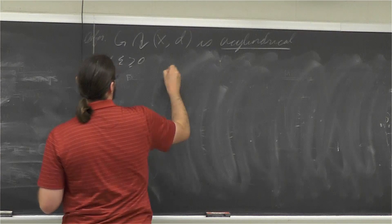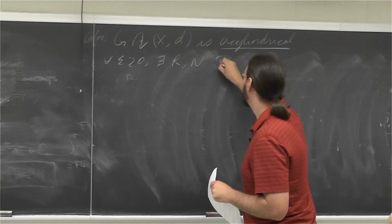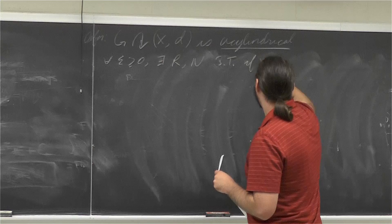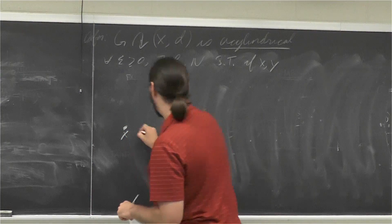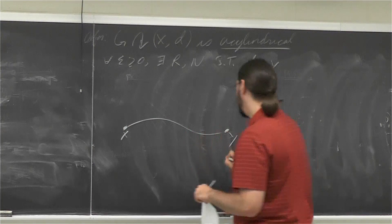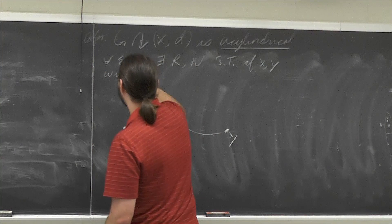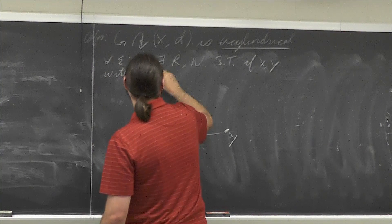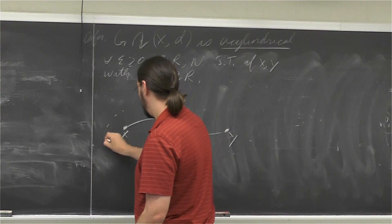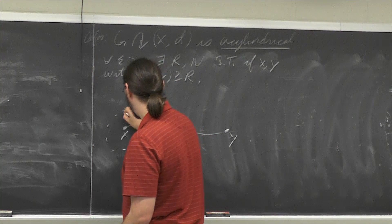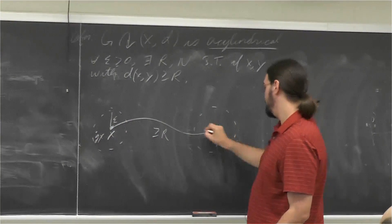This acylindrical condition is something of a weak form of properness. For all epsilon greater than or equal to zero, there exist two constants R and M, satisfying: if I take two points X and Y that are far away — the distance between them is at least R — then I look at the group elements which move both of these points inside balls of radius epsilon.